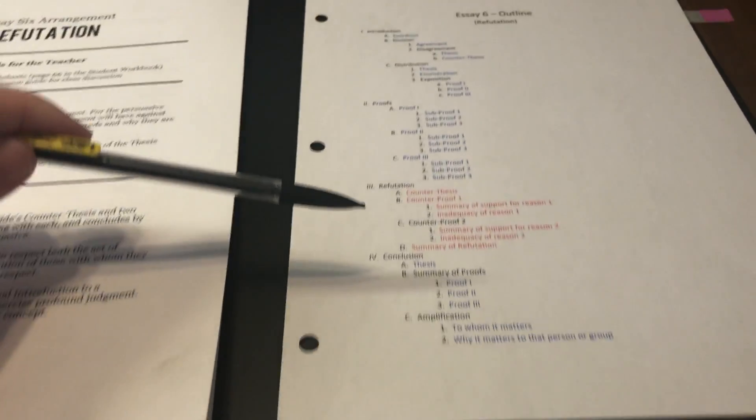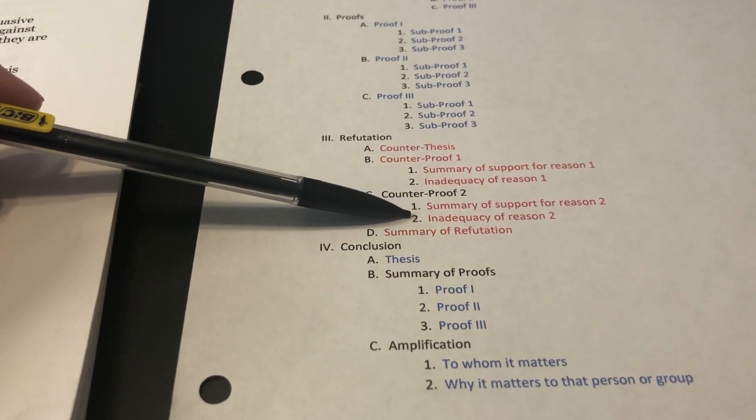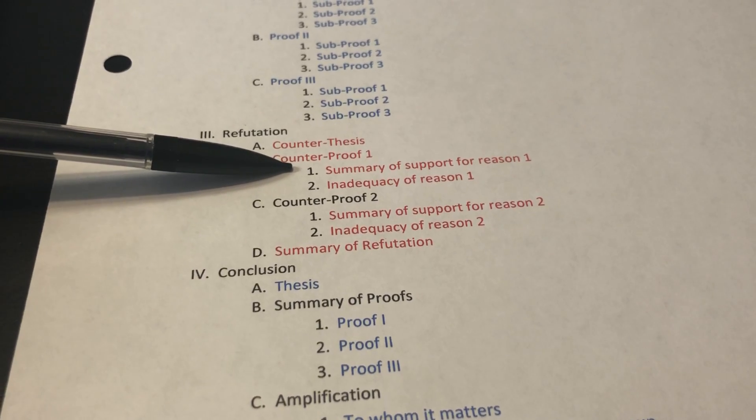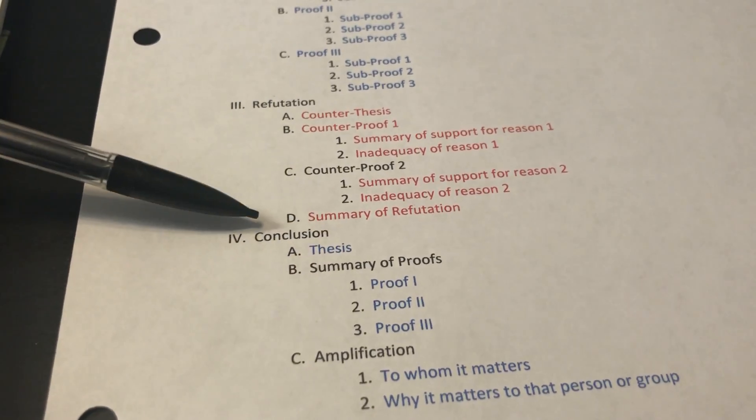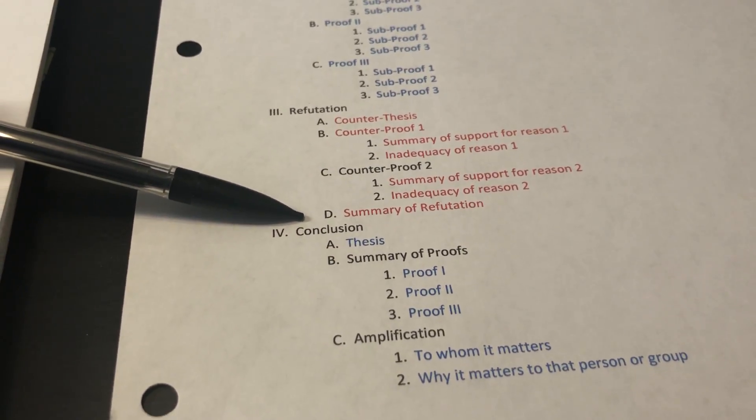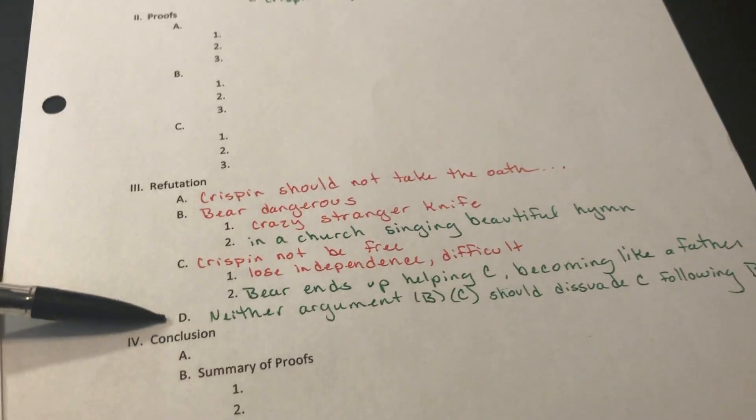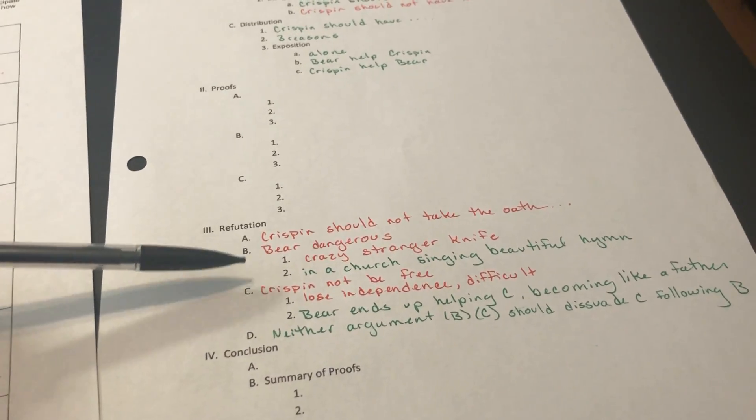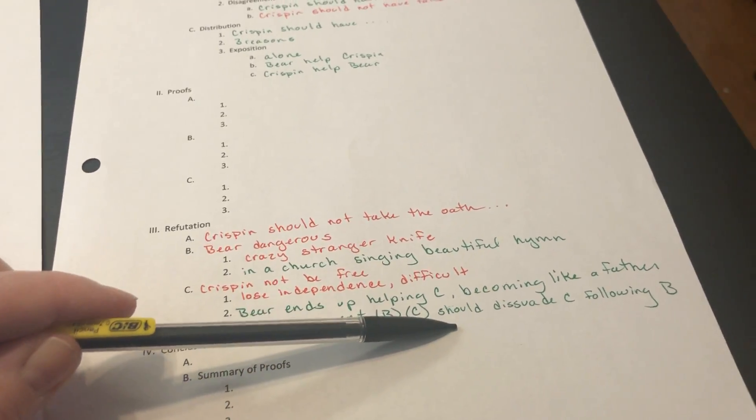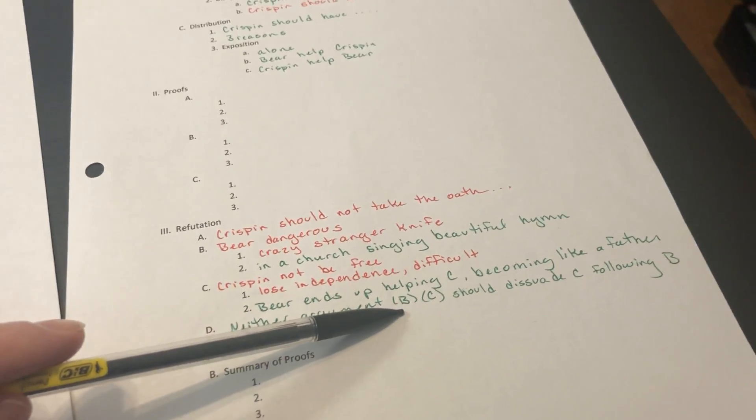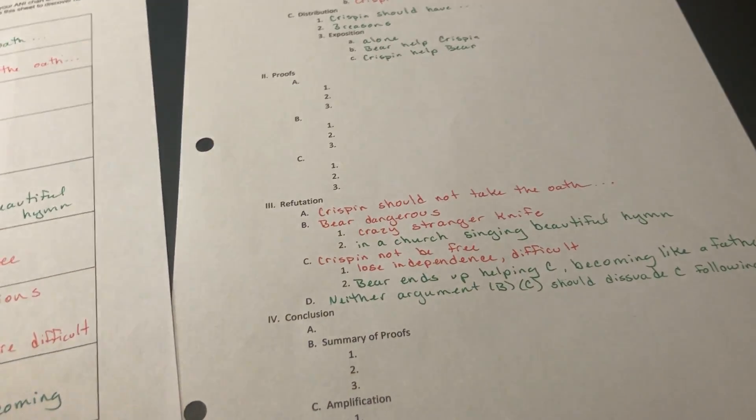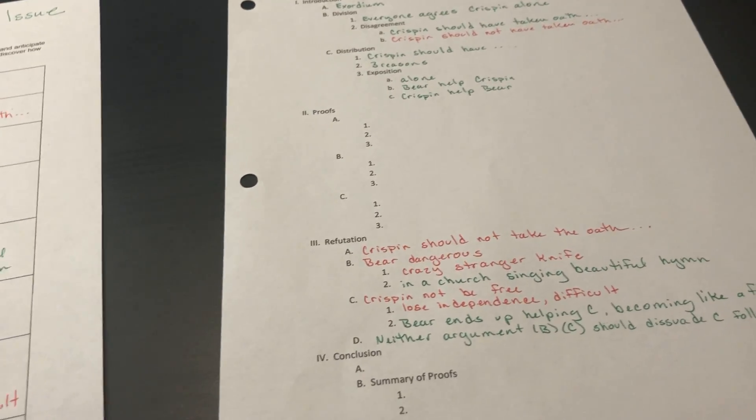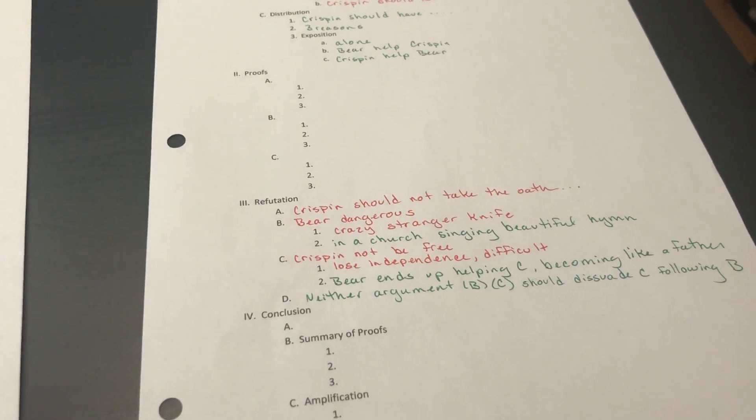At the end, it says, you see how you're going to summarize each of these. Number one, it says summary of support. Summary of support in both of these. You're going to give why that is inadequate. And then down here, summary of refutation. This is where you're just going to wrap the whole thing up and remind us of both arguments. Neither argument, the fact that Bear is dangerous and that Crispin would not be free, should dissuade Crispin from following Bear and taking the oath. This is where you're going to wrap it all up and give us a reminder of why these reasons are not sufficient for me to change my mind.